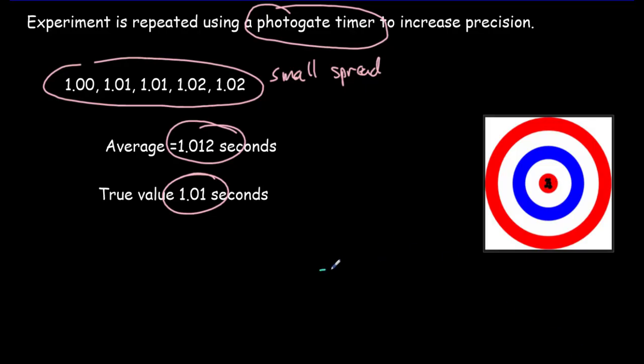And if we made our graph showing the true value, say here, all of our measurements would be closely spaced around that true value. And ideally, that's what we'd like to have when we do an experiment.